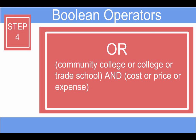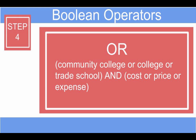Using OR with parentheses is a way to combine similar terms to get more results. For example, in our first set of parentheses we will put community college OR college OR trade school. Then we'll use the connector AND, and then in our final set of parentheses we will use cost OR price OR expense.